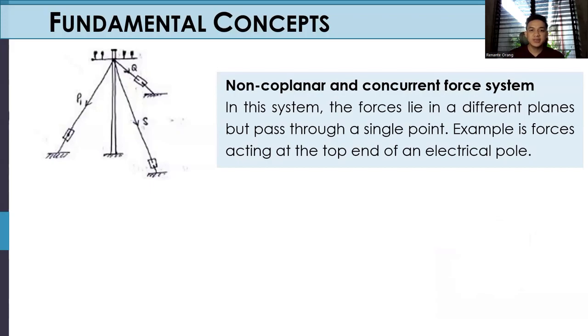Force system is called non-coplanar and concurrent force system. In this system, the forces lie in different planes but pass through a single point. Example is force acting at the top end of an electrical pole. As shown in the figure, the forces intersect each other at a single point but they don't have the same plane.